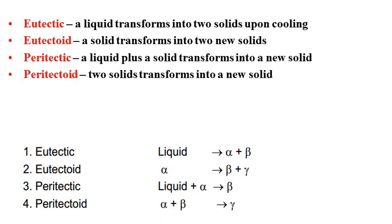We will be discussing the iron carbide diagram in upcoming videos. In this video, as I was mentioning, it is a trick — a magic table trick which I have derived to understand these four reactions, which are generally asked in competitive examinations. Let us go on to the magic table, how it is to be framed and how we can infer the relationships.